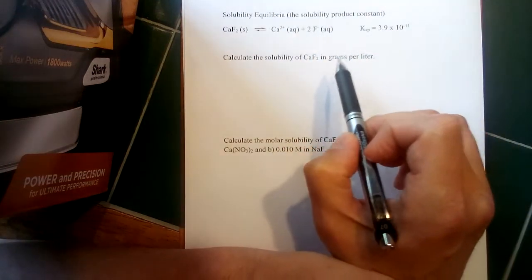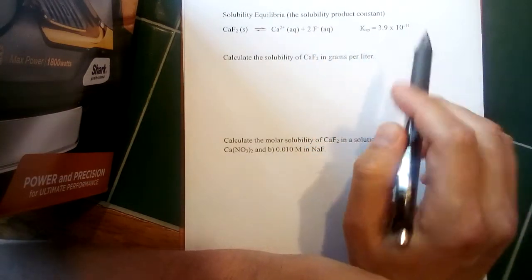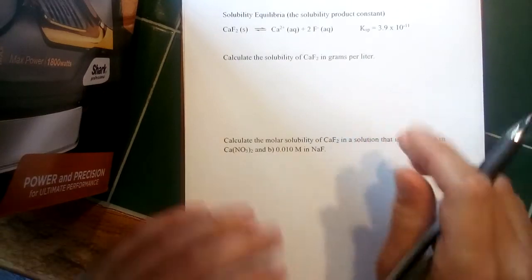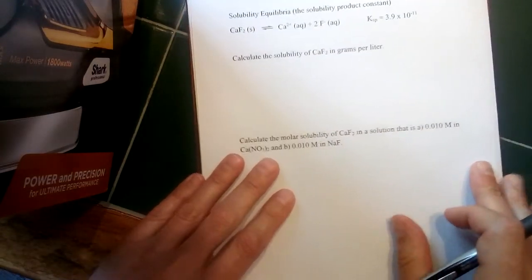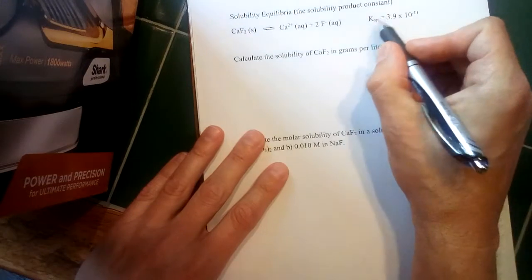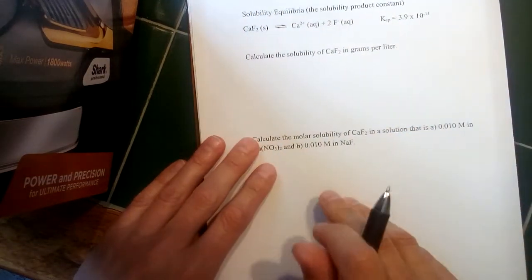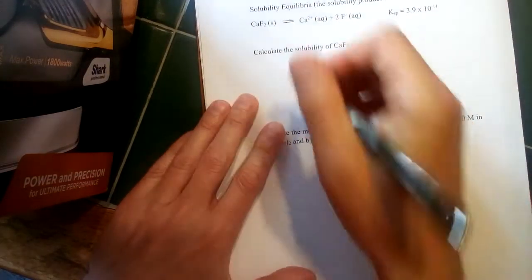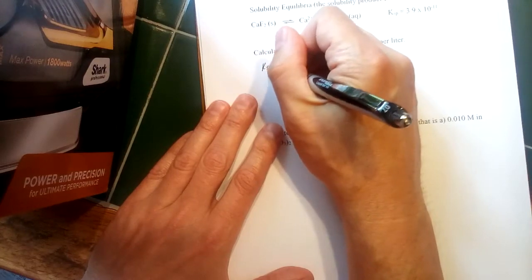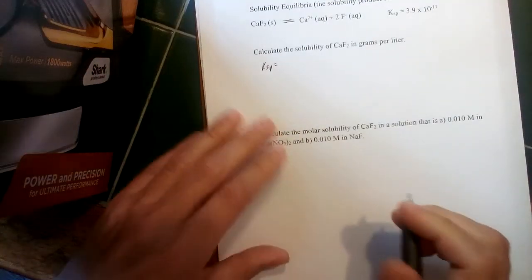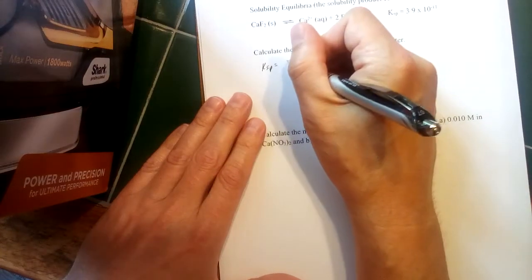And there's an equilibrium constant that we can use to describe that equilibrium. Now the subscript sp here is for solubility product, so this is called a solubility product constant. The way we define these is exactly the same as we've been doing for the other equilibrium constants we've seen.